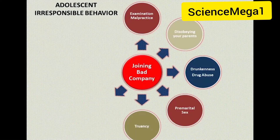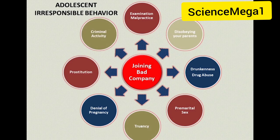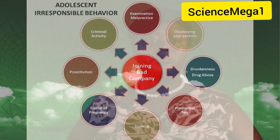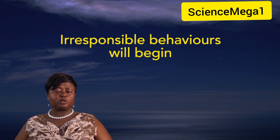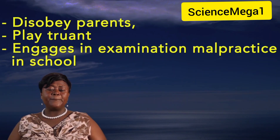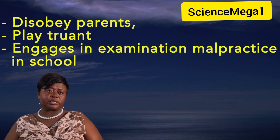Congratulations. Study the adolescent irresponsible radar on your screen carefully and find the relationships between the central point and other levels in blue round balloons. From the radar, you notice that when a good and obedient student joins a bad company, there is a very high likelihood that irresponsible behaviors will begin. The relationship is that an adolescent who joins bad company is likely to disobey parents, play truant, and engage in examination malpractice in school, which may eventually lead to school dropout.